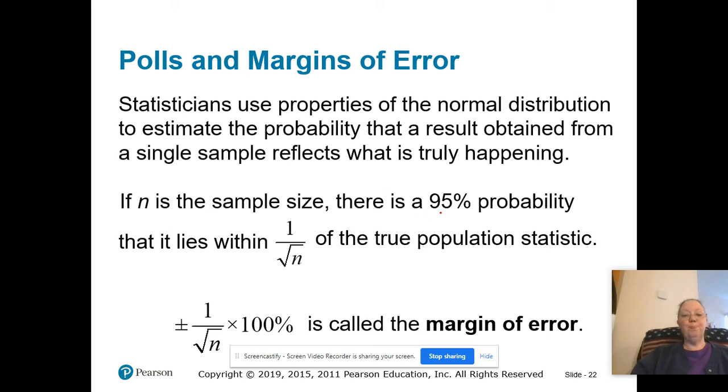That means we're pretty confident that what we say is going to be the truth, but there is a possibility for error. The way we figure out the margin of error, we need to go one divided by the square root of the sample size. It lies within, meaning either above or below. So it could be one over the square root of n above what we just said, or one over the square root of n below, times 100%.